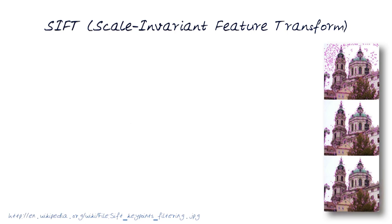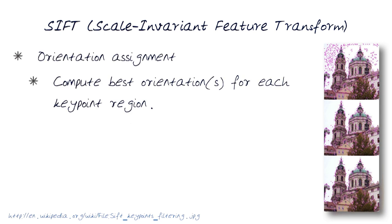I just want to quickly review the whole process of how scale invariant features are computed, SIFTs. First, we want to find the orientation, compute the best orientation for each keypoint region.